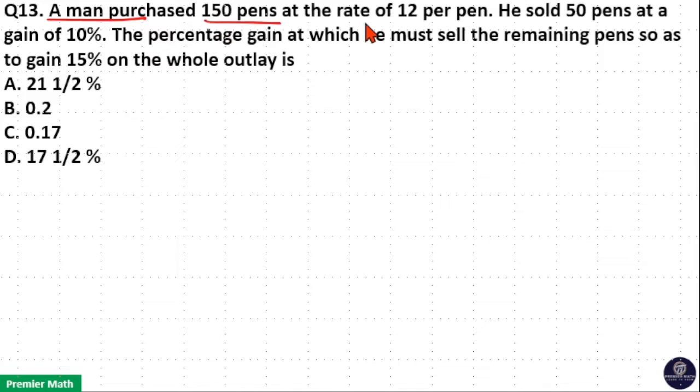A man purchased 150 pens at the rate of 12 per pen. He sold 50 pens at a gain of 10%. The percentage gain at which he must sell the remaining pens so as to gain 15% on the whole outlay is.